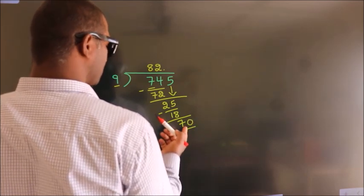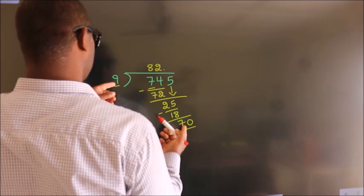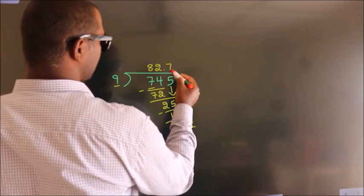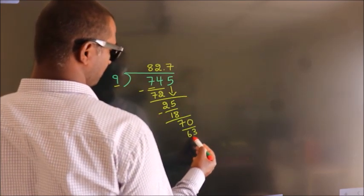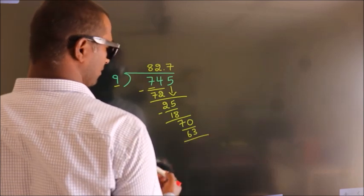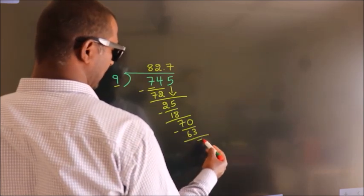A number close to 70 in the 9 table is 9 times 7, 63. Now we subtract. We get 7.